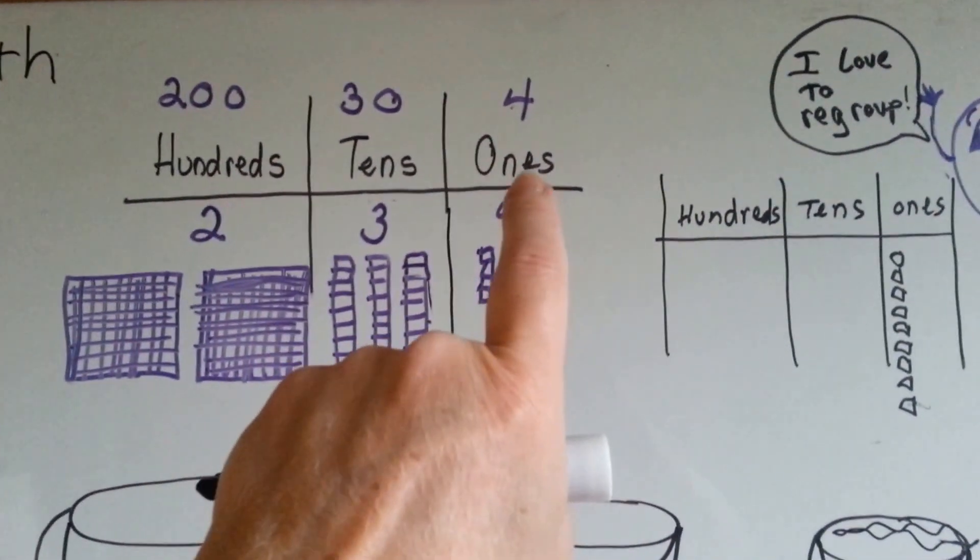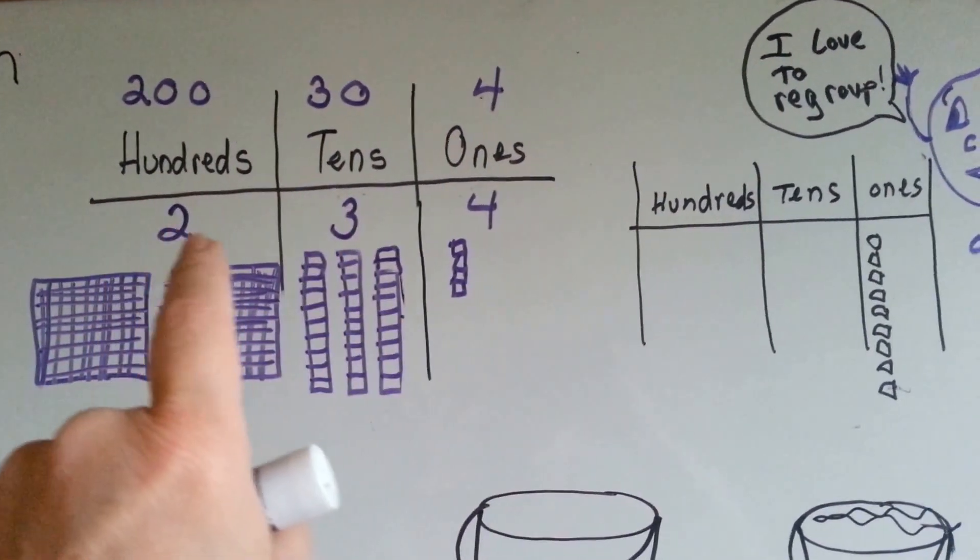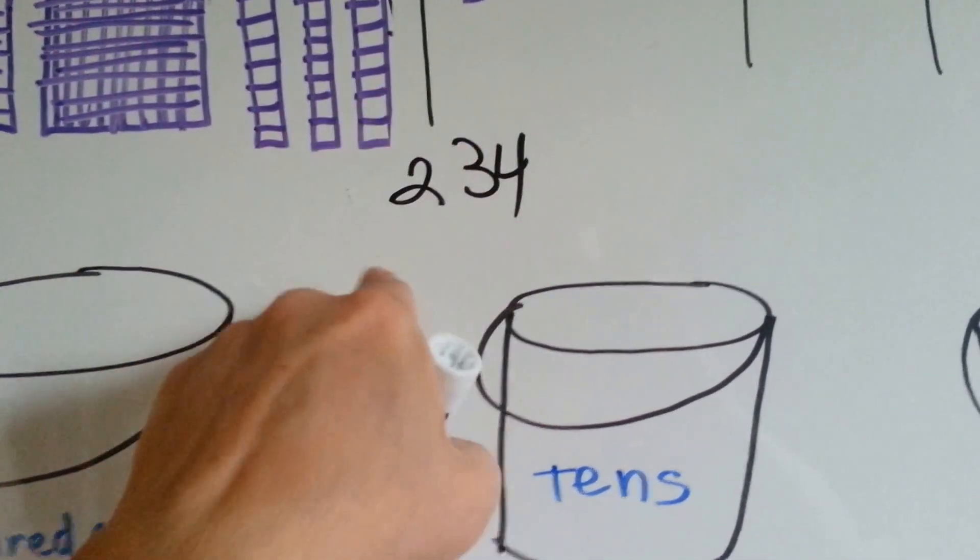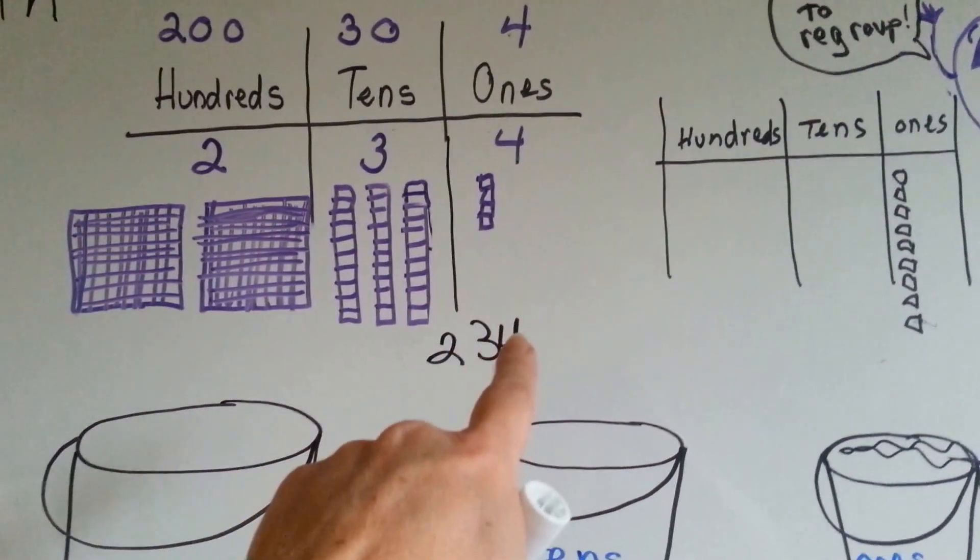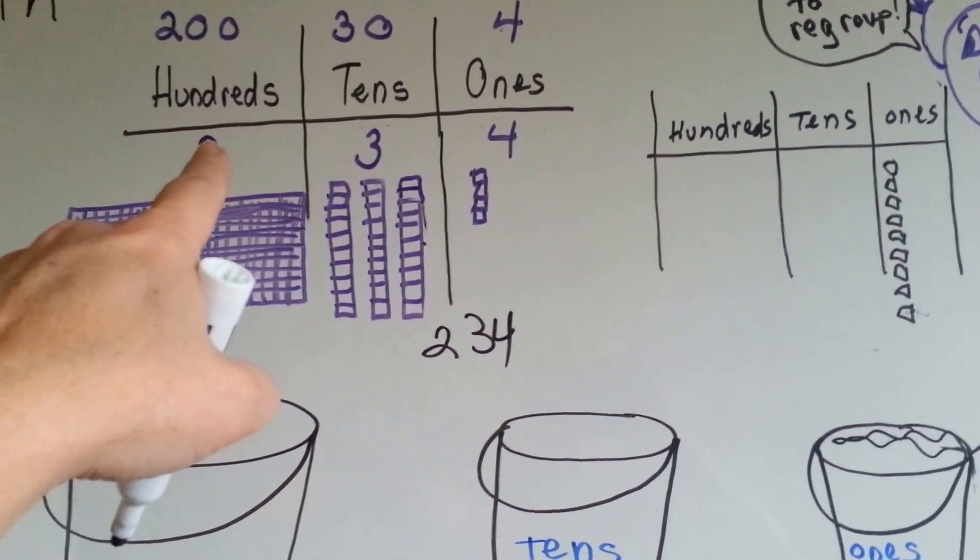Place value in a number is the number where the places sit. If you had 234, 234 written like this, the 4 is in the ones place, the 3 is in the tens place, and the 2 is in the hundreds place.